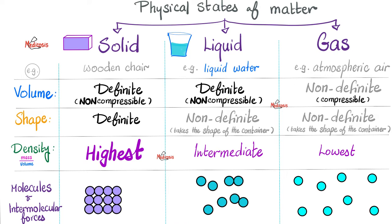Conversely, liquids have definite volume — not compressible. If I have 100 ml of liquid in this glass, I cannot compress that volume and make it shrink. The shape, however, is not definite — water is going to take the shape of the container. Put it in a sink, it takes the shape of the sink. In a wine glass, a different shape. In a champagne glass, another shape. Density is lower than that of solid, but higher than that of gas. Molecules of liquid are farther apart than in solid, but more cohesive than gas.